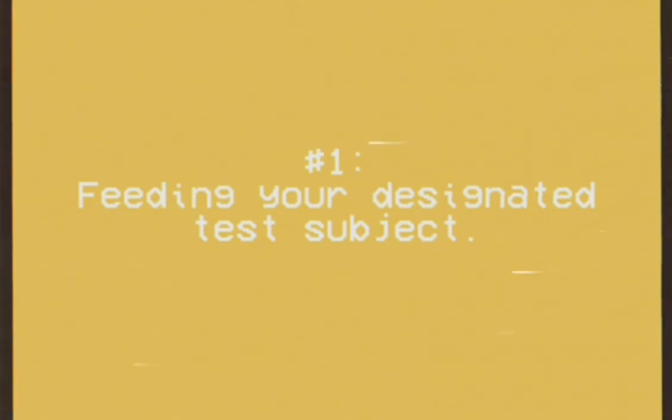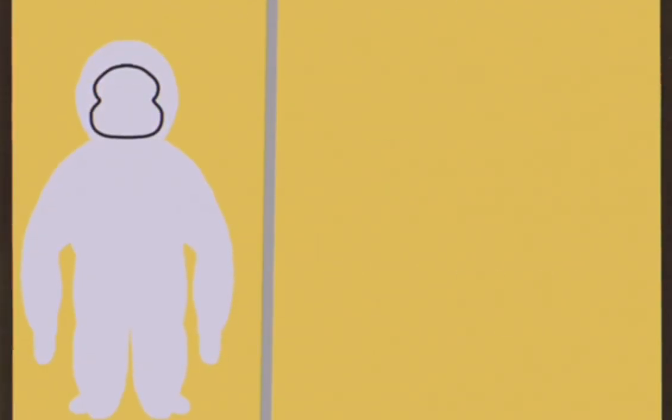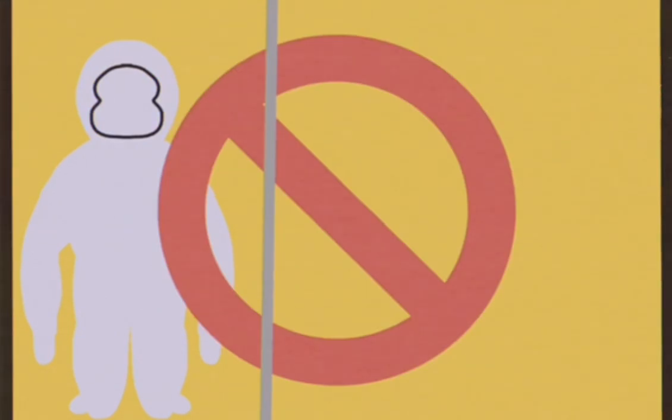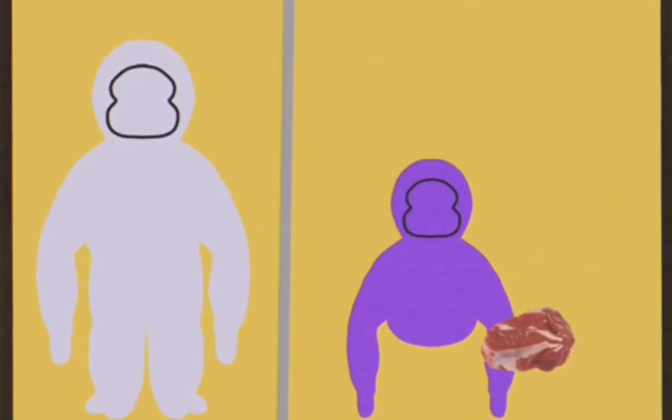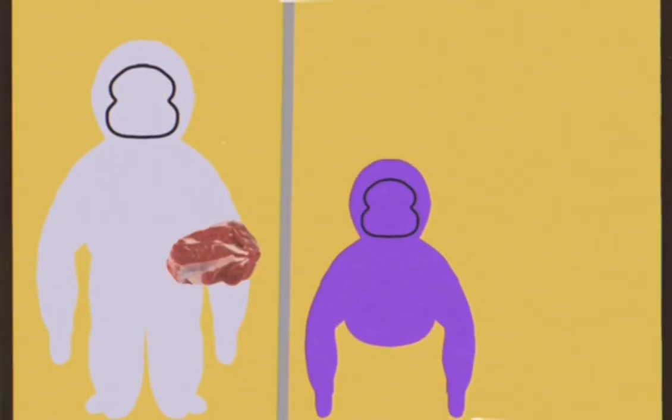Number one, feeding your designated test subject. If you are feeding subject Gabe, before all things, make sure specimen is contained in cage. Once you are confident enough to say the specimen is confined, get its food in the supply closet and feed the specimen through the small glass flap on the cage.